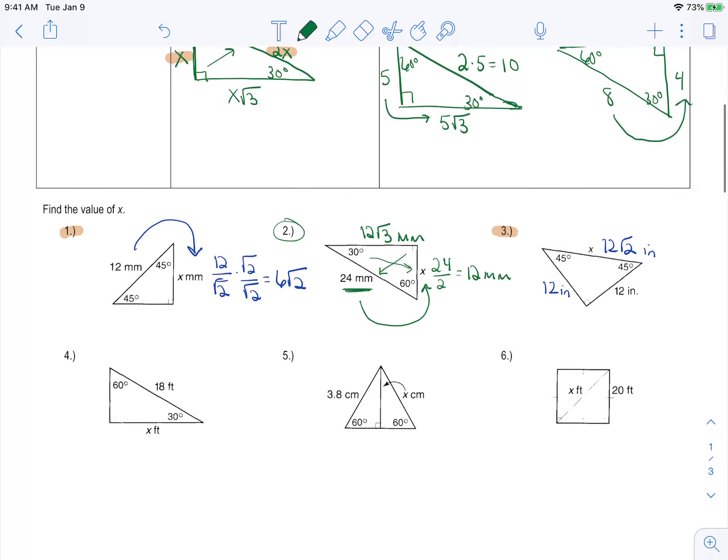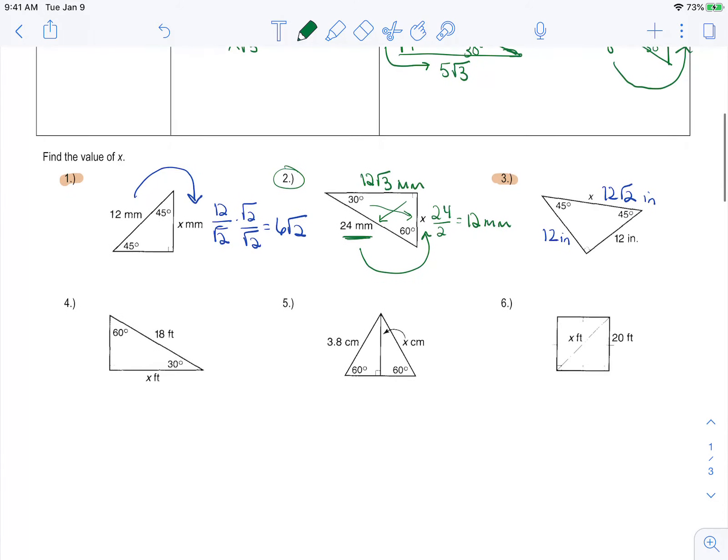So maybe try to pause the video and try number 4 and see if we all get the same answers. So my hypotenuse is 18. I'm going to go to my short first, which is across from the 30. So that will be 9. And then I'm going to go to the long and I multiply it by root 3.